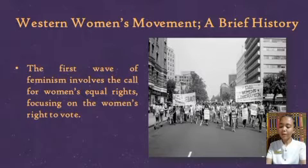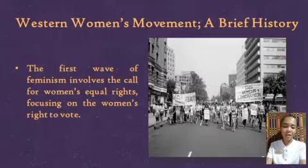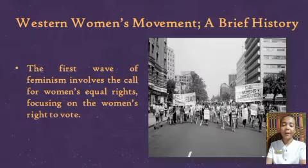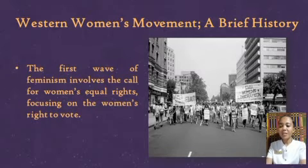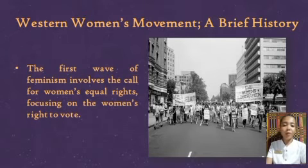Throughout most of Western history, women were confined to the domestic sphere while public life was reserved for men. In medieval Europe, women were denied the right to own property, to study, or to participate in public life. Women were not allowed to vote or run in politics. So in the first wave of feminism, the focus on women's equal rights prioritized allowing women to run in politics, make decisions for themselves, and to be empowered politically.